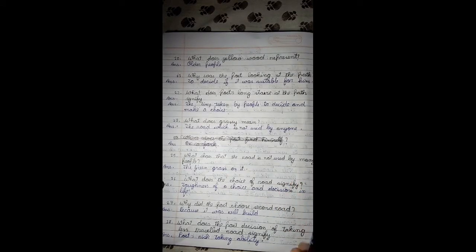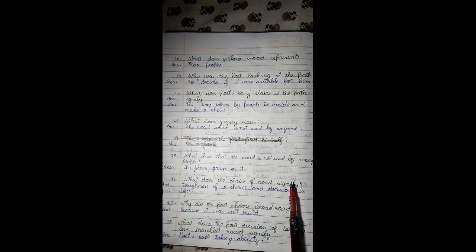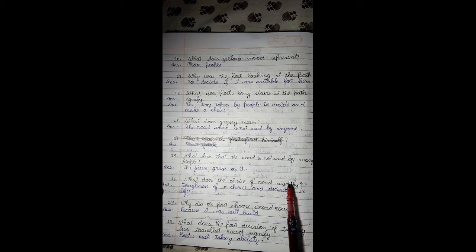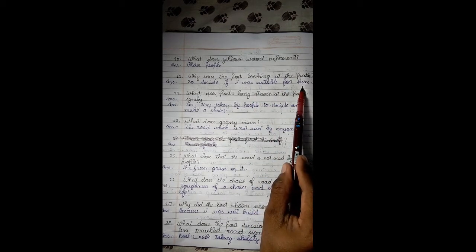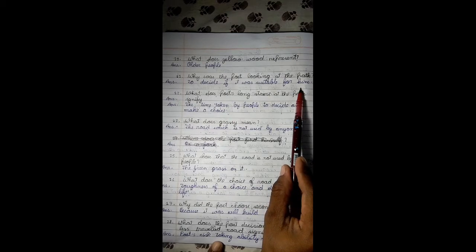What does yellow wood represent? It shows old age or old people. Why was the poet looking at the path? To decide if it was suitable for him. He wants to know whether the path he is going to walk on is suitable for him or not.